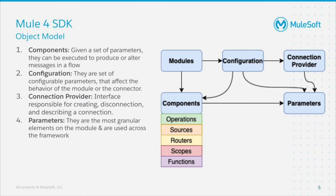If you take an example of an HTTP connector, think of its operations as components. HTTP offers you operations like request, listener, and so on. Configuration: configurations are a set of parameters that affect the behavior of the module or connector. For example, within the HTTP connector, we create a configuration with parameters like port and base path which can affect the behavior of the connector.